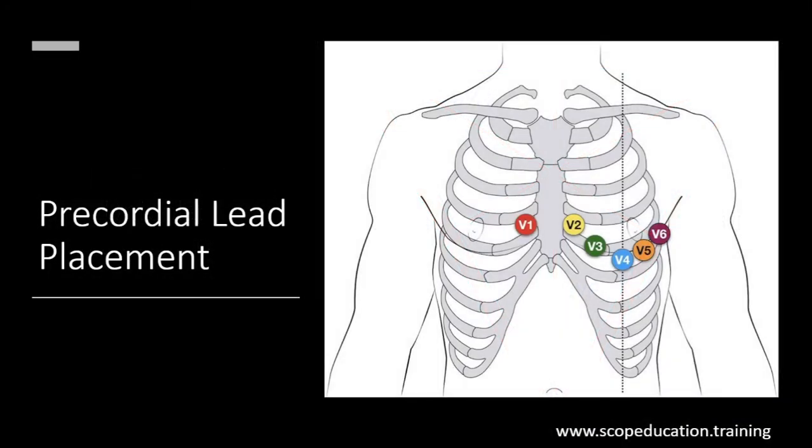Now we're going to go into our precordial leads, which is going to be V1 to V6. As you can see, these leads show a transverse view of the heart. Placement is very important for all your leads, but especially these ones. I want to preface this: if you start putting V1 and V2 in wonky areas, it might show some ST elevation or Brugada sign that might not even be there just because you put them in the wrong area.